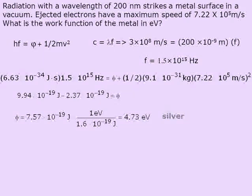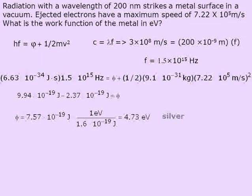So 4.73 electron volts is the work function of the metal — the amount of energy it took to get the electron out. This is in fact the work function of silver. The problem stated a maximum speed, which implies some electrons come out slower. That's because not all electrons are bound with the same strength to the metal. The work function is defined as the amount of energy it takes to get the most loosely bound electrons out of the metal.